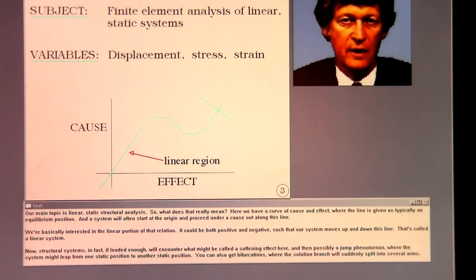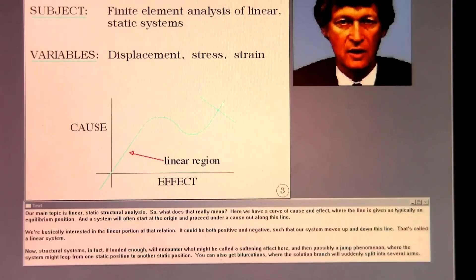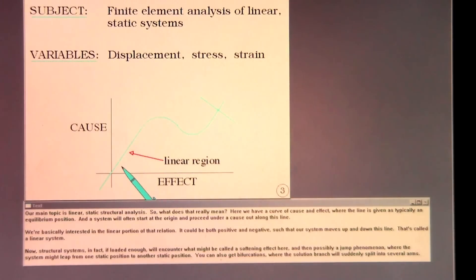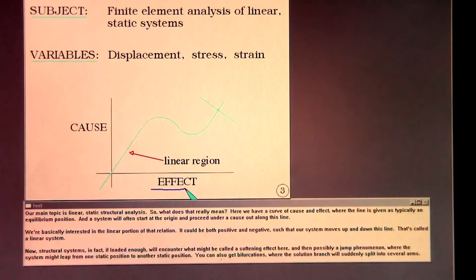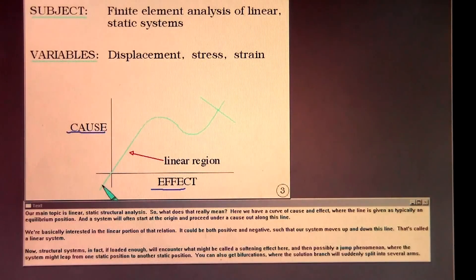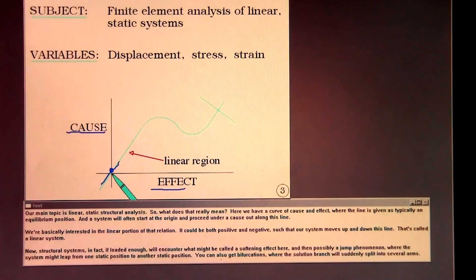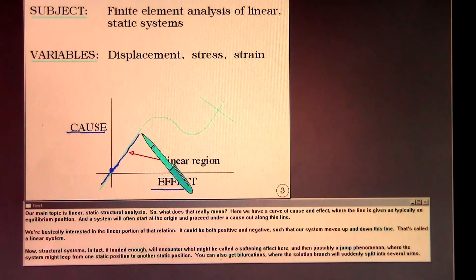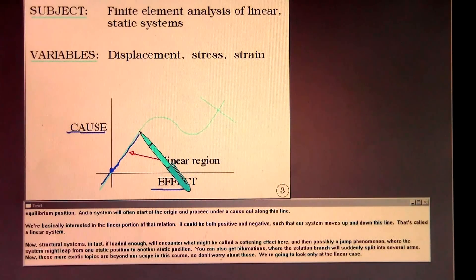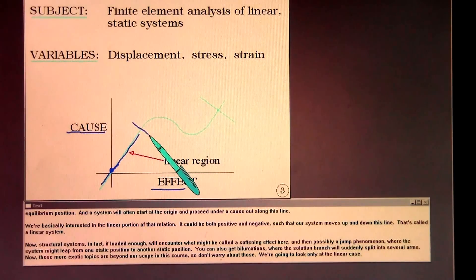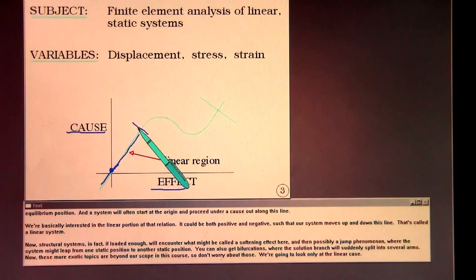Our main topic is linear static structural analysis. Here we have a curve of cause and effect, where a line is given as typically an equilibrium position, and a system often will start at the origin and proceed under a cause out along this line. We're basically interested in the linear portion of that relation, could be both positive and negative, such that our system moves up and down this line.